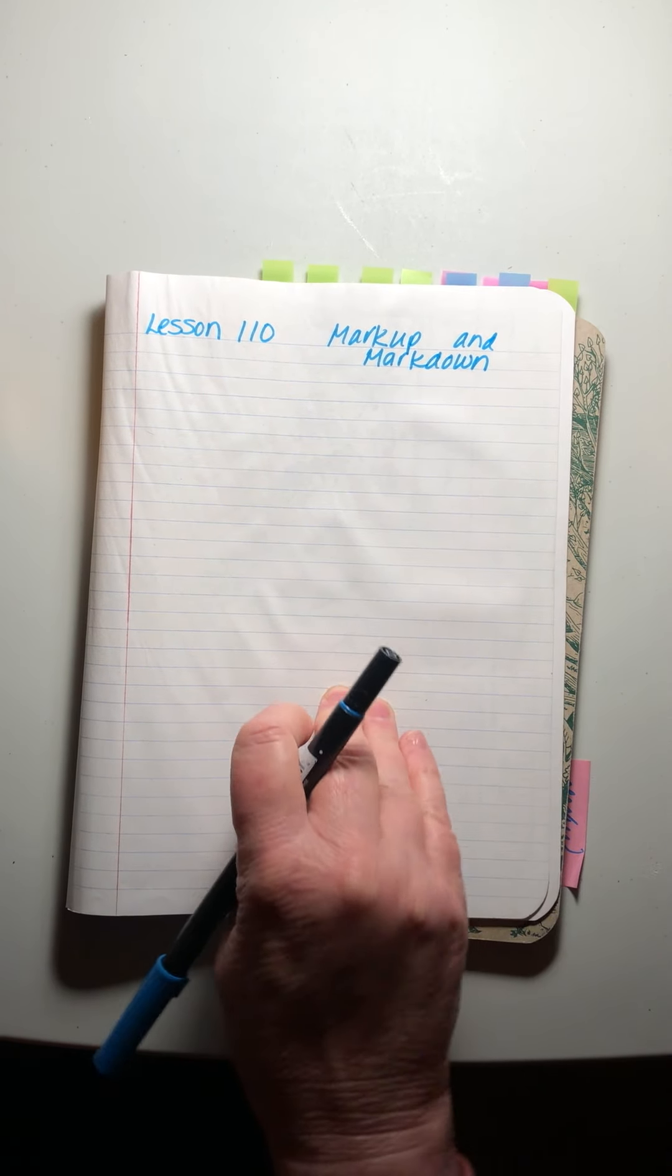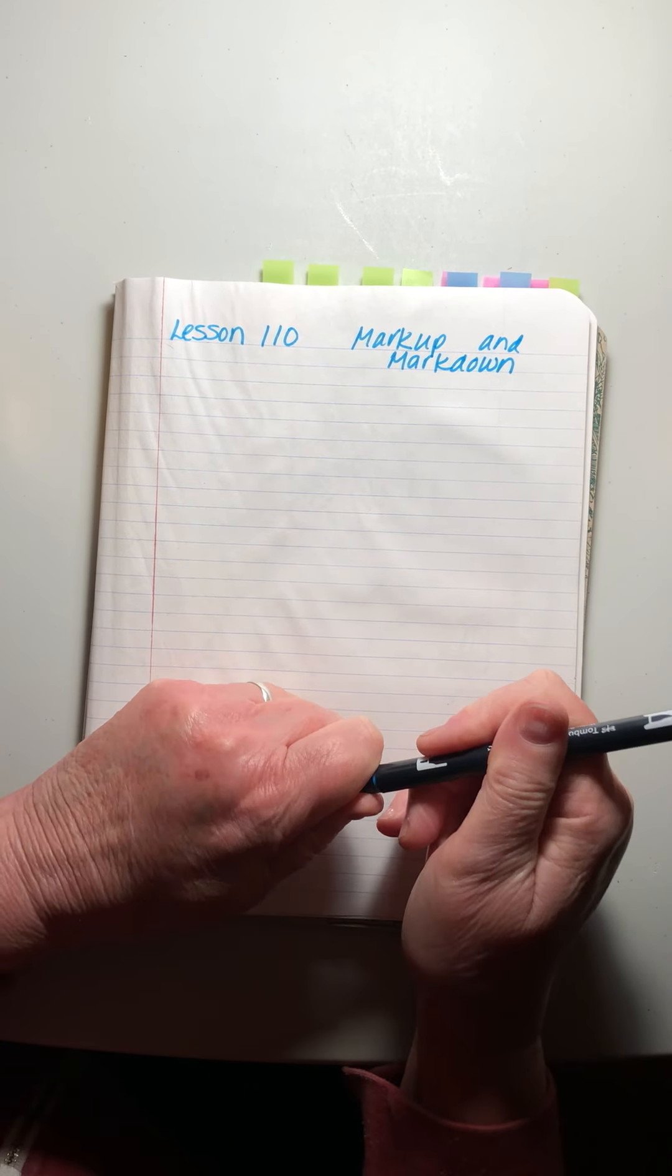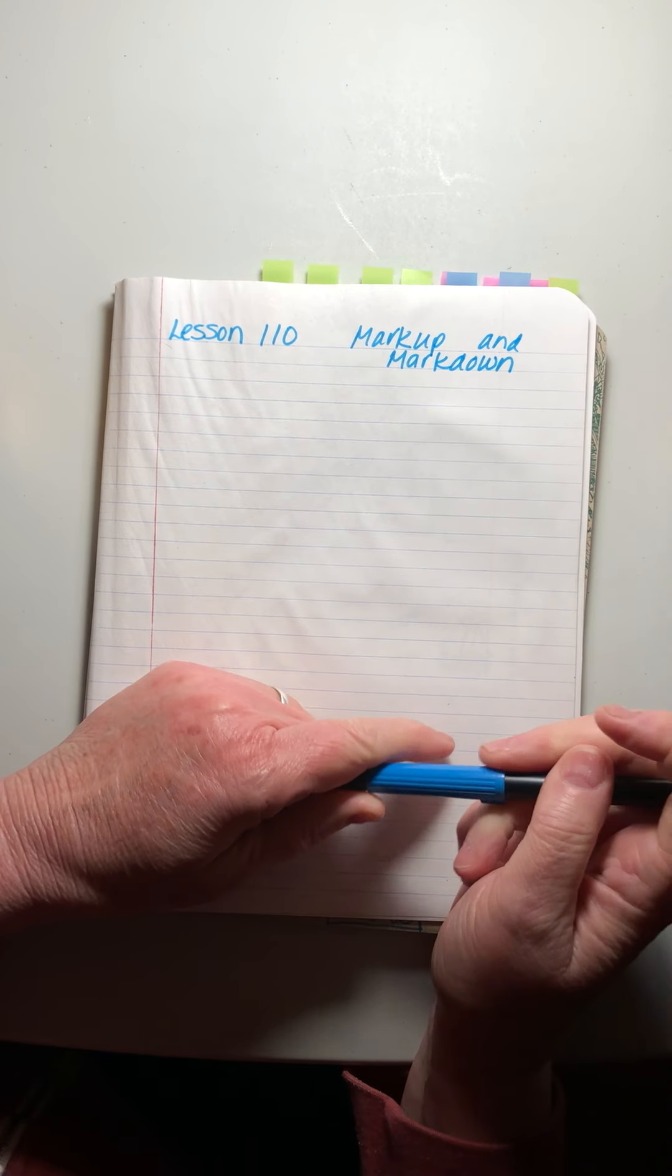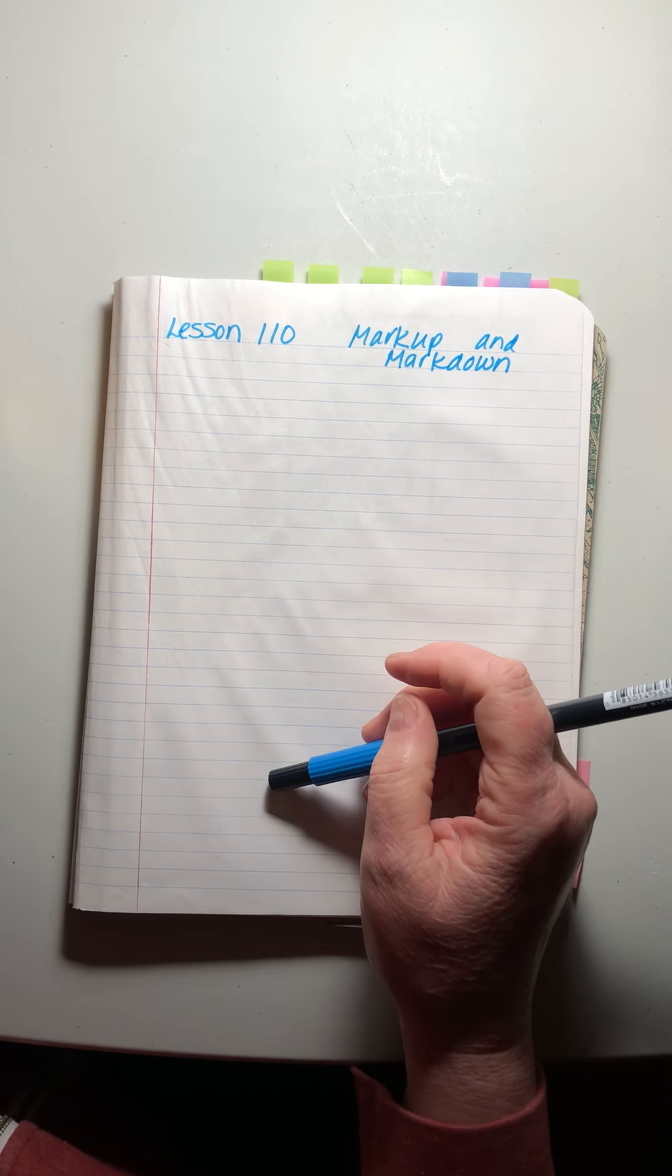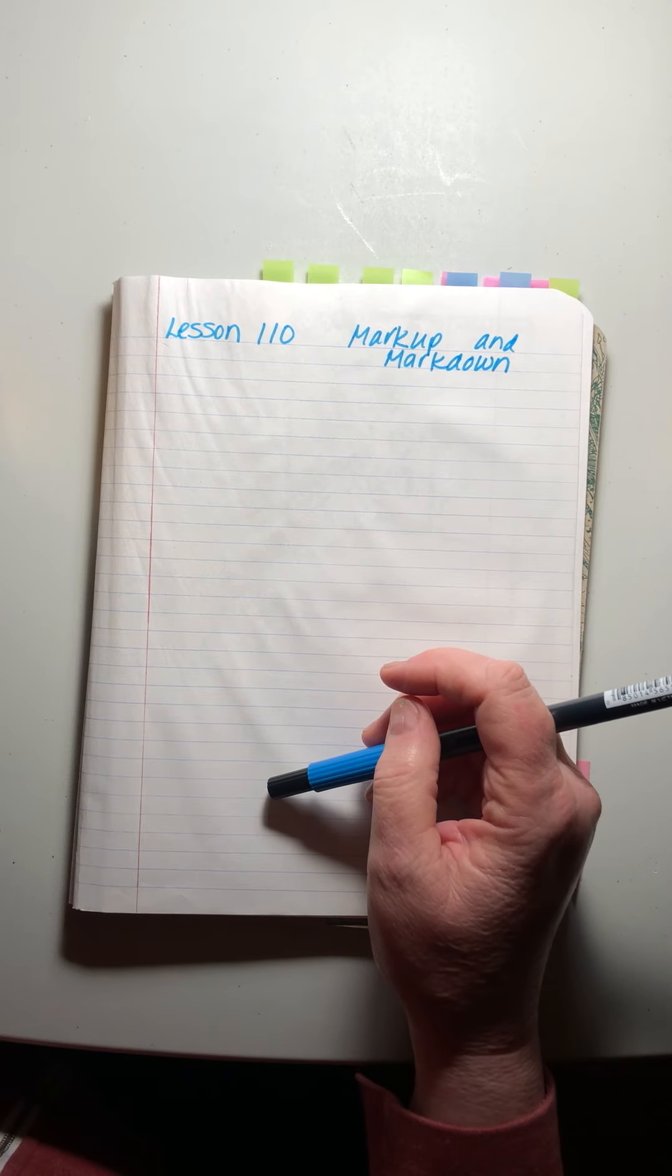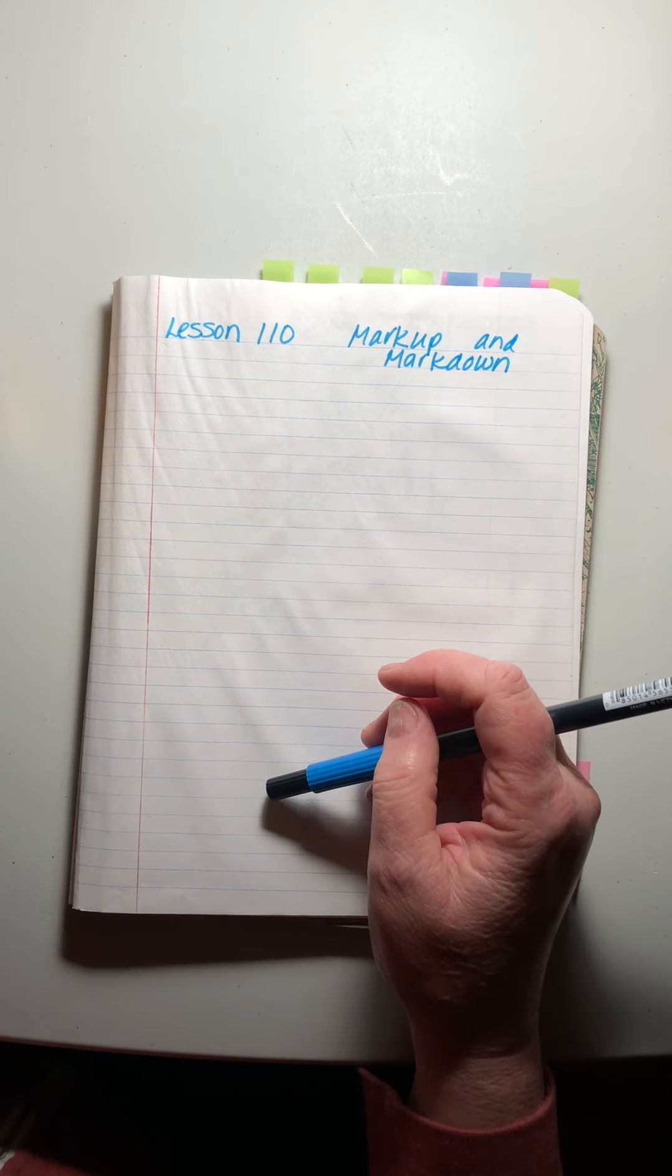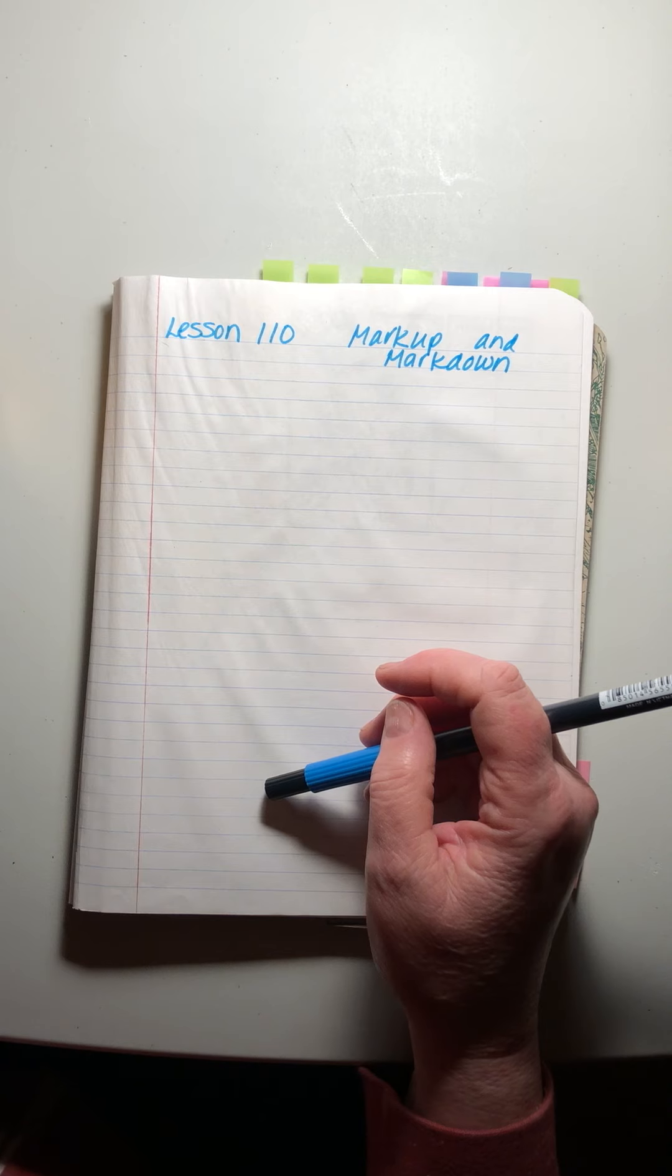Saxon Algebra 1½, Lesson 110. Today we continue our discussion of business math topics. Last time we talked about simple interest and compound interest, and how much money banks will pay us for using our money.